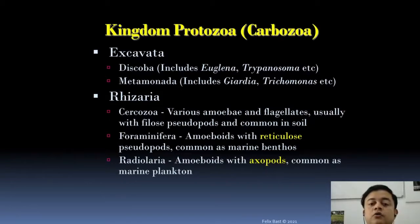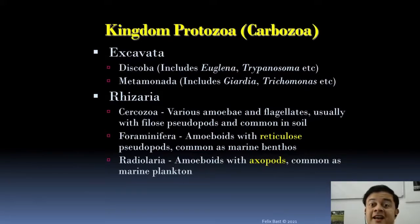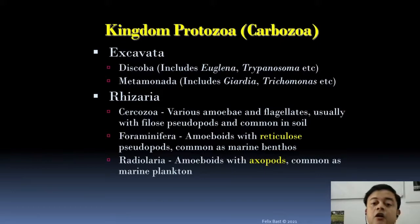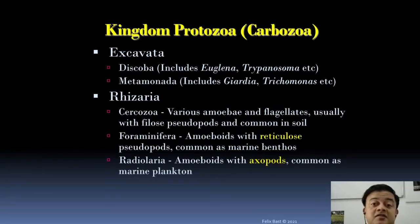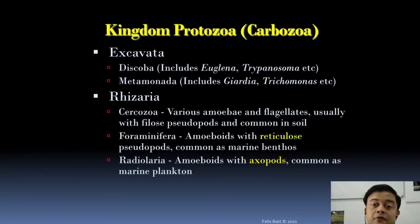Foraminifera are very common in the ocean — marine water. They are amoeboids with reticulose pseudopods — reticulose means mesh-like or net-like pseudopods — and are common as marine benthos, which are bottom-dwelling organisms. Foraminifera have even been identified in Challenger Deep, 12,000 meters deep — the deepest trench in the world, the Mariana Trench near Japan. The submarine Challenger went there to take samples, and later analysis found foraminifera living under immense hydrostatic pressure.